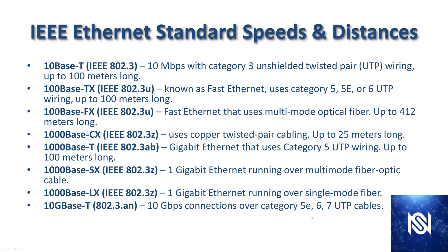If you see some common threads in the naming conventions here: 'T' usually means twisted pair Ethernet. Then you'll see a number of designators that equal fiber — SX and LX. We're going to talk a bit more about fiber in a later lesson, where multimode fiber is used for shorter distances and LX single mode fiber is used for longer distances. It is absolutely fair game for them to quiz you on any of these details.